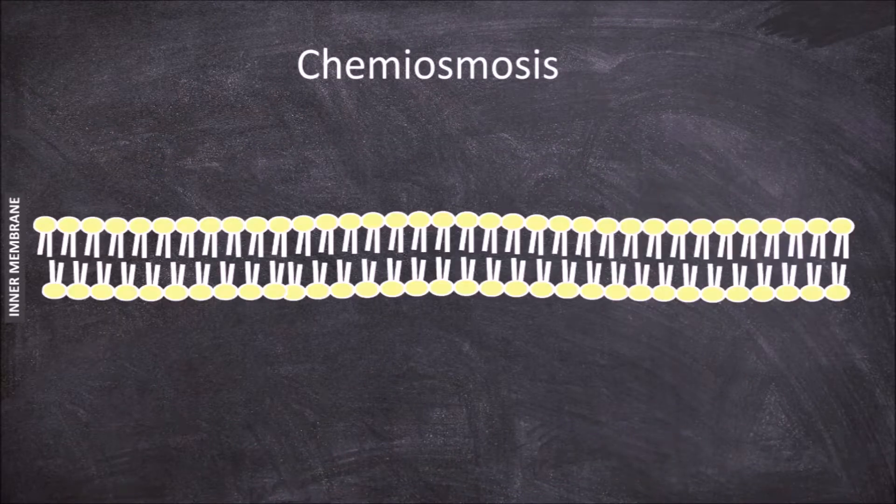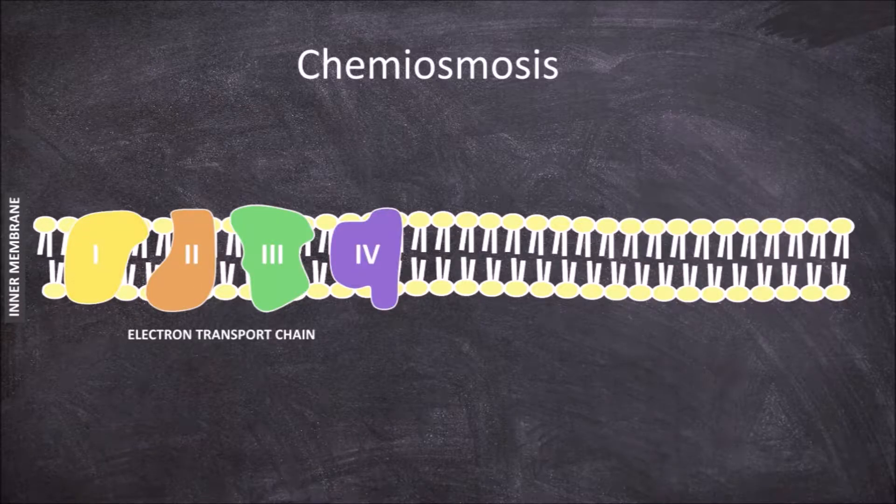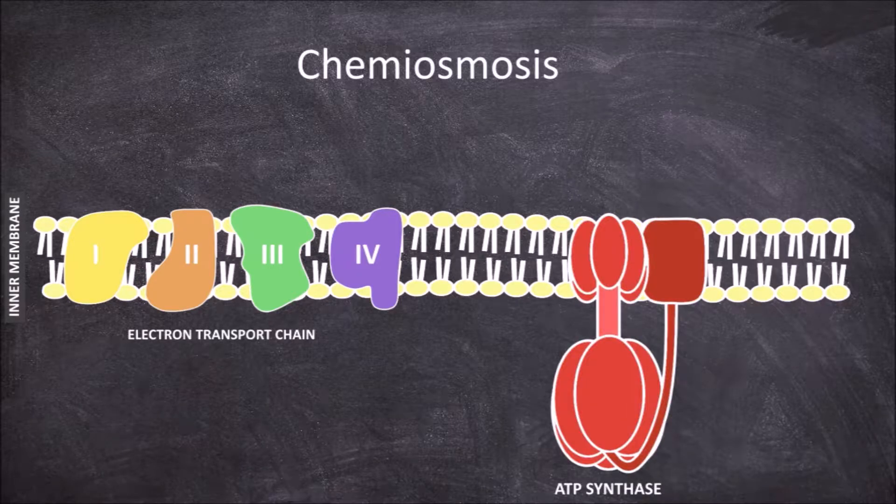Chemiosmosis occurs in the inner mitochondrial membrane and is coupled with the electron transport chain. It occurs through an additional membrane protein called ATP synthase, which as the name suggests is involved in the production of ATP.